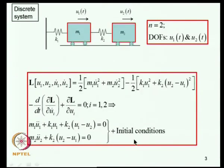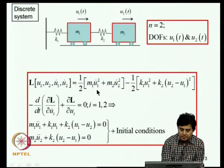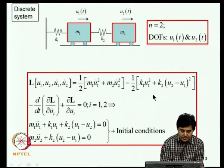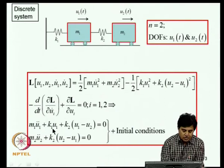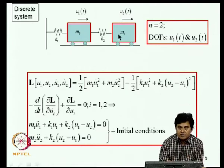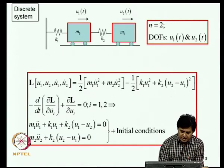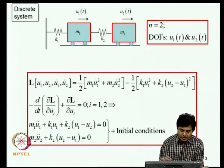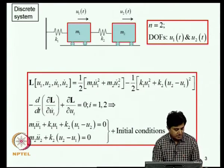We applied this principle to simple dynamical systems like a 2-degree-of-freedom discrete multi-degree-of-freedom system. We set up the expression for the Lagrangian in terms of kinetic energy and potential energy, and showed that this approach leads to a pair of coupled second-order ordinary differential equations. This pair of equations could also be obtained by drawing free body diagrams of M1 and M2 using D'Alembert's principle, but the Lagrangian approach deals only with scalar quantities like energies, not vector quantities.